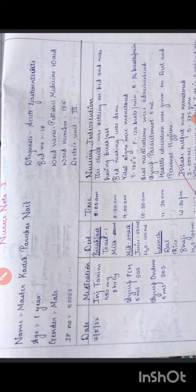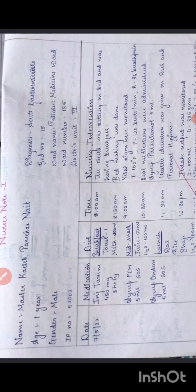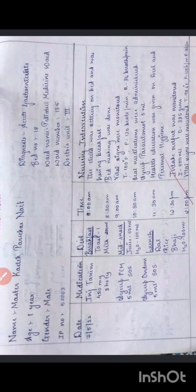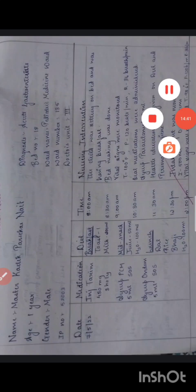Next comes the nurse's note. Remember that nine identifiers must be used — compulsory for child health nursing — including name, age, gender, IP number, diagnosis, bed number, ward name, ward number, and doctor's unit. In the nurse's note, mention date, medications with dosage and timing, diet including breakfast, mid-morning snack, and lunch, and nursing interventions with timestamps — such as vital signs: temperature, pulse, respiration, and input-output records.